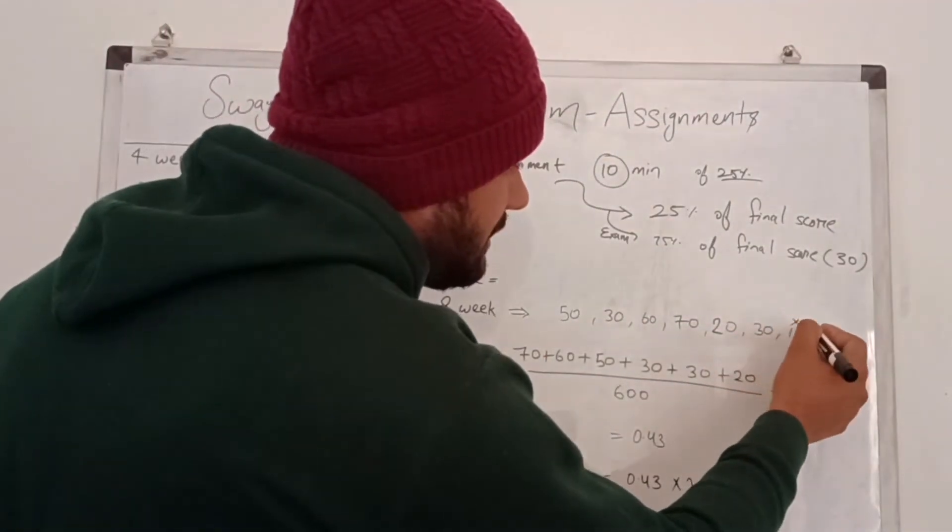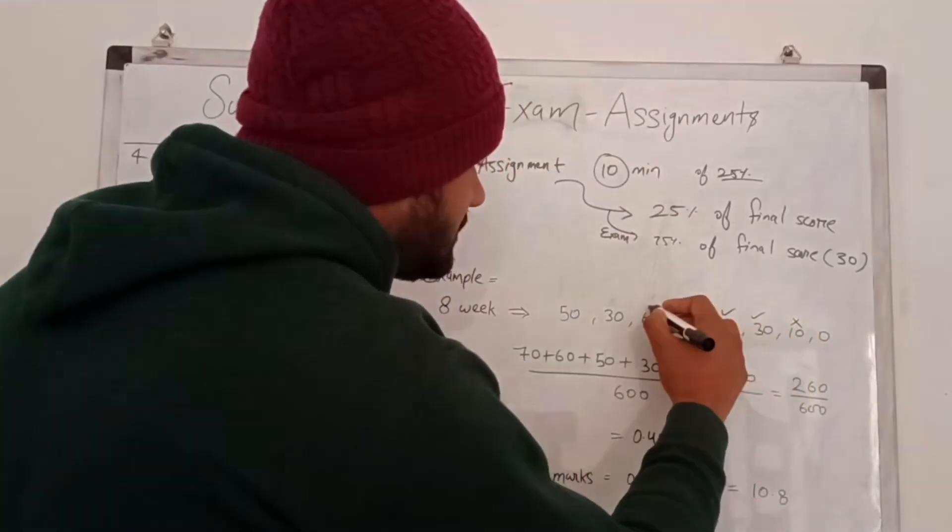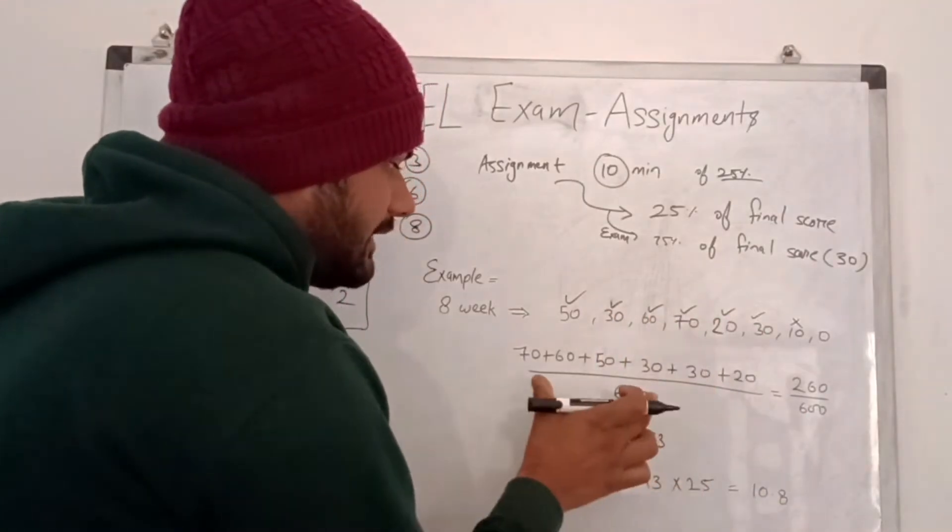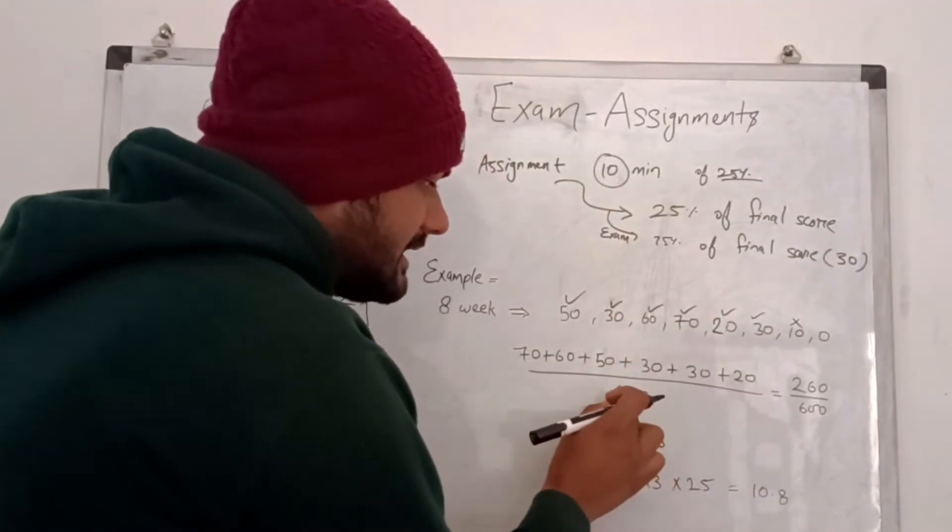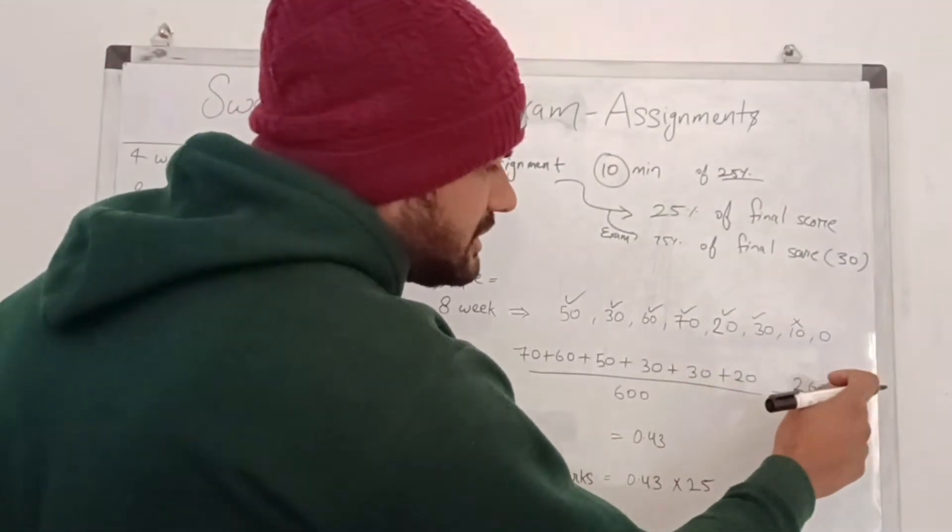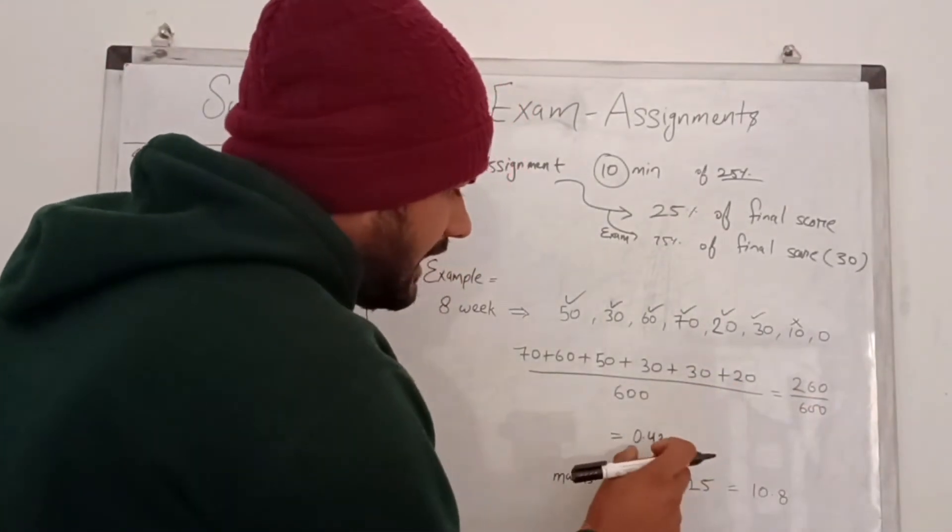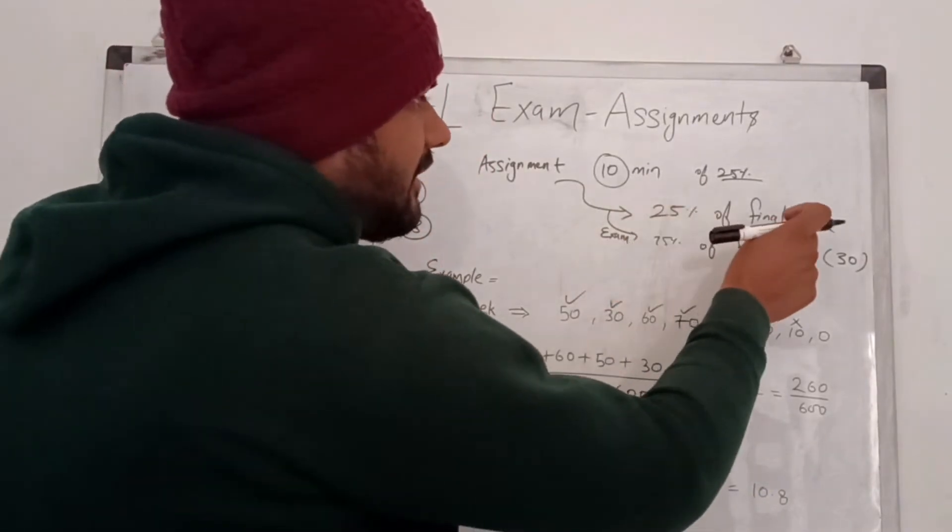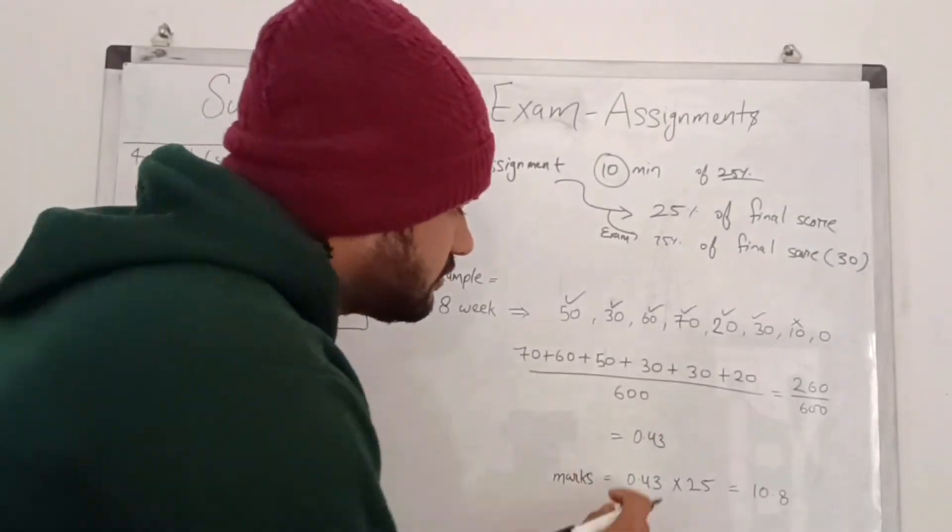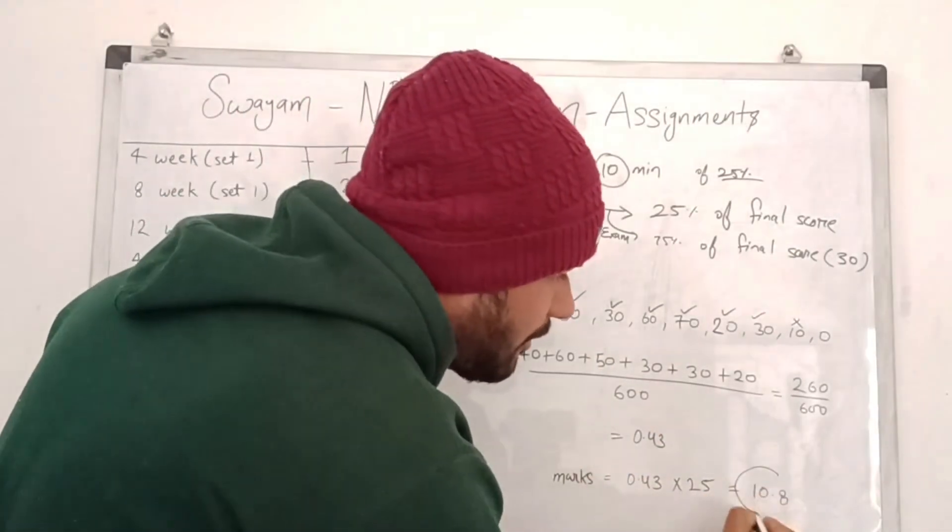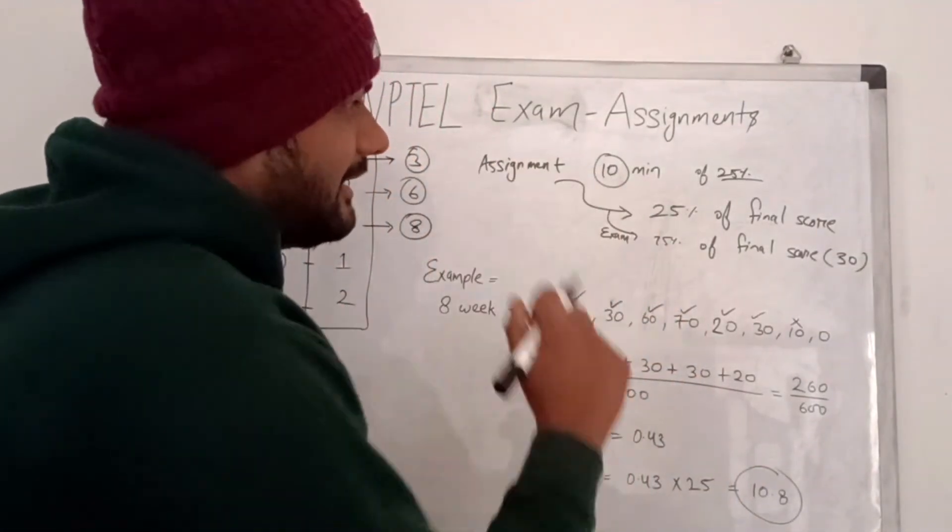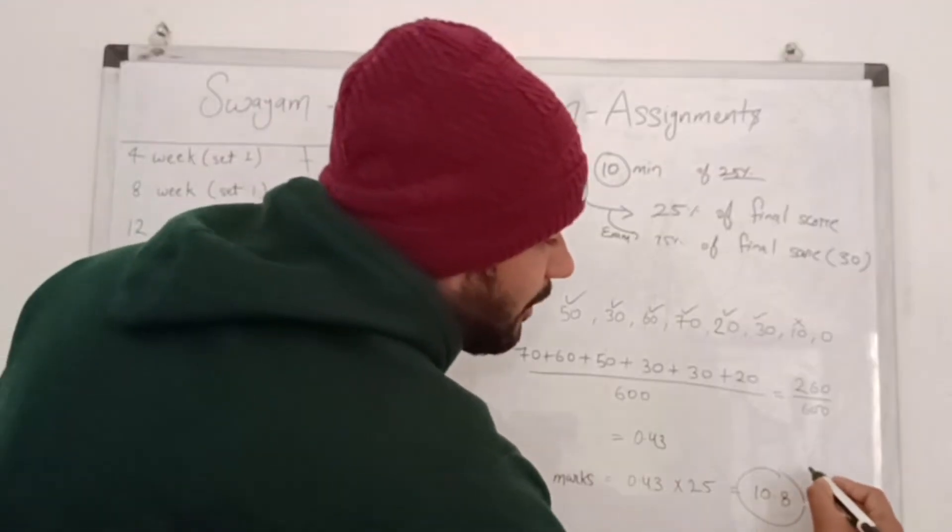The minimum is 10, so only the best 6 will be calculated. All this will be summed, so 260 divided by 600. That value is 0.43. Now the final score is about 25 percent, so we will multiply with 25. Then value is 10.80, which is more than 10. So you have cleared your assignments criteria.